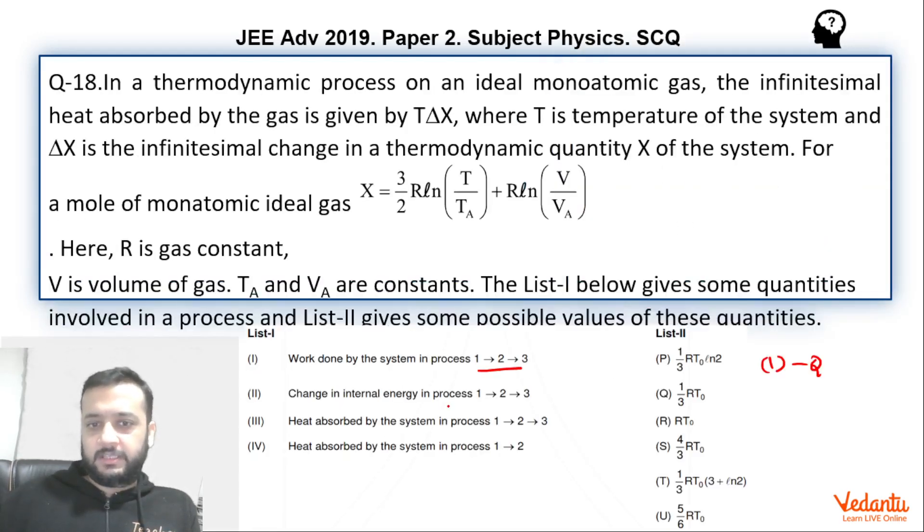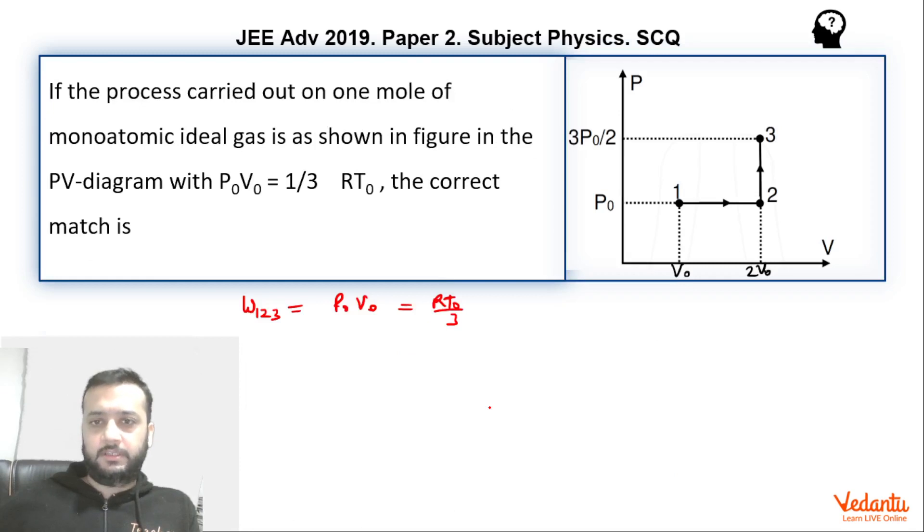Second, we have to find change in the internal energy in 1, 2, 3. So 1, 2, 3 my internal energy can change. So that we can simply say n Cv delta T. So here the temperature was T0 by 3 because you can see when pressure is P0, volume is V0, temperature will be T0 by 3 because moles is 1.